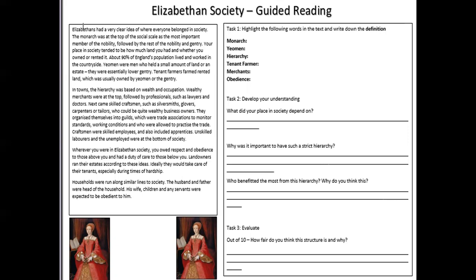In towns the hierarchy was based on wealth and occupation. Wealthy merchants — those who traded things like wine and expensive materials like silk — were at the top, followed by professionals such as lawyers and doctors. Next were skilled craftsmen like silversmiths, glovers, carpenters, and tailors, who could be quite wealthy. They organised themselves into guilds — associations to monitor standards and working conditions. You had to be part of a guild to practice a trade; if you were a tailor you couldn't trade unless you were part of a guild.